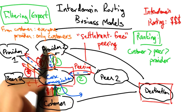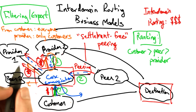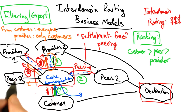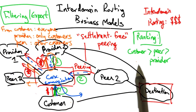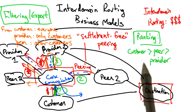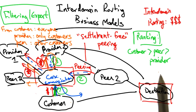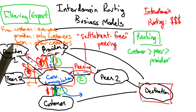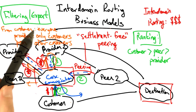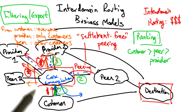Similarly, routes from peers would only be advertised to customers, not to other peers or other providers. To summarize, inter-domain routing has both ranking rules — where an AS prefers a customer route over a peer route over a provider route — and filtering rules, where given a selected route from a customer, provider, or peer, it makes different decisions about where to re-advertise that route to other neighboring ASs.